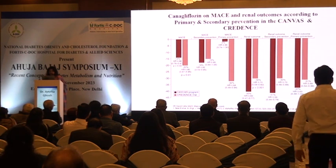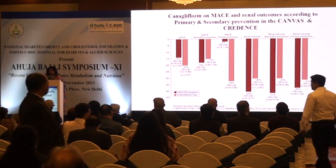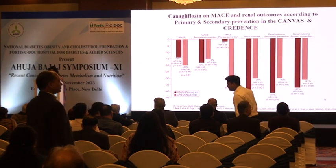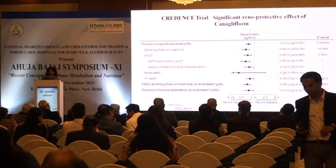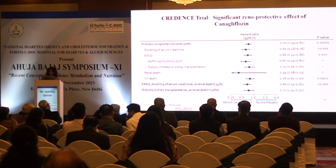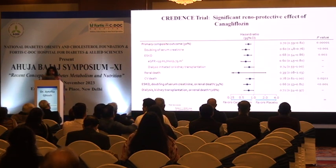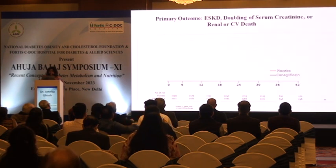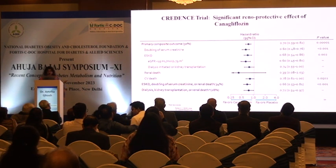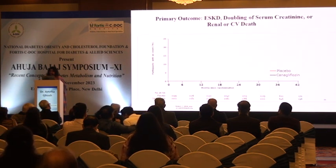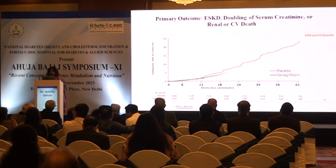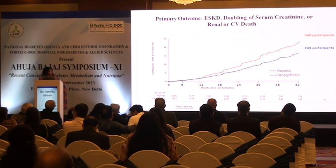The CREDENCE and CANVAS trials showed that canagliflozin performed well across all MACE outcomes — secondary prevention, primary prevention, and renal outcomes. The CREDENCE trial demonstrated that canagliflozin is renal protective, with approximately 30% relative risk reduction in primary outcome, 34% risk reduction in doubling of serum creatinine or renal death, and 28% reduction in dialysis, kidney transplantation, or renal death. The hazard ratio favours canagliflozin from as early as 1 year, with a hazard ratio of 0.7.